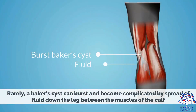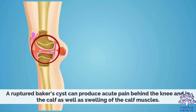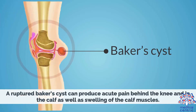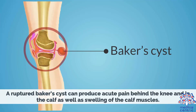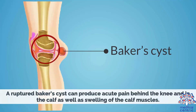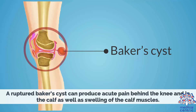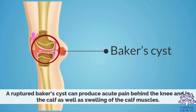Rarely, a Baker's Cyst can burst and become complicated by spread of fluid down the leg between the muscles of the calf. A ruptured Baker's Cyst can produce acute pain behind the knee and in the calf, as well as swelling of the calf muscles.